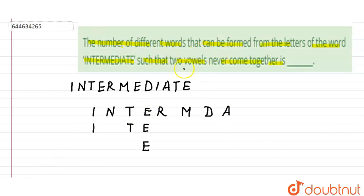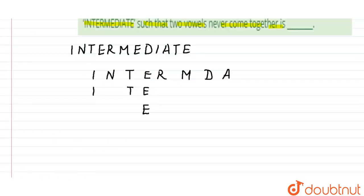Therefore, let us write the consonants over here. Consonants will be N, T, T, R, M, D. So there are six consonants. Now we have to make spaces so that no two vowels come together.